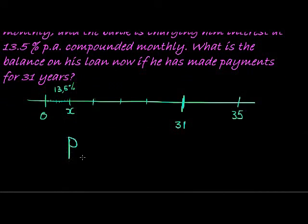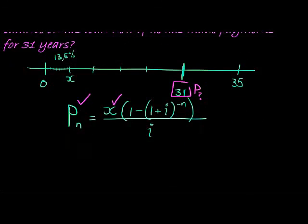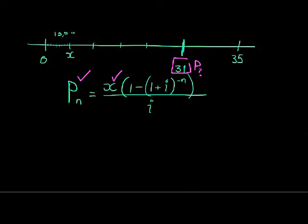So if we look at our formula, P_n is equal to x times (1 minus (1 plus i) to the power negative n) over i. We can see here that we know what the original value is, but we want to use this formula, the same formula, to find out what will the value be here. And to do that we are first going to need to calculate x. So that's going to be our first step, calculating the monthly amount that he has paid back.